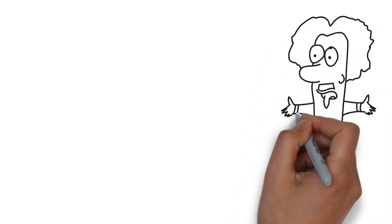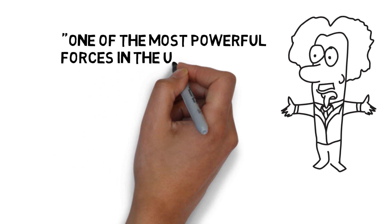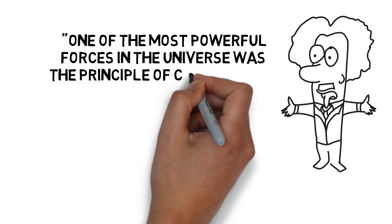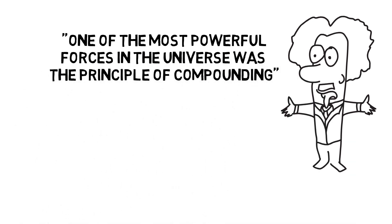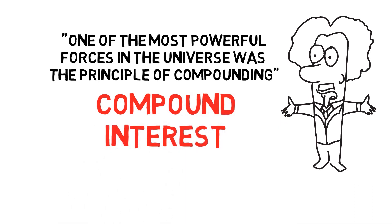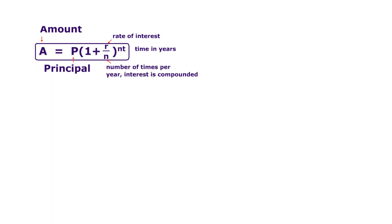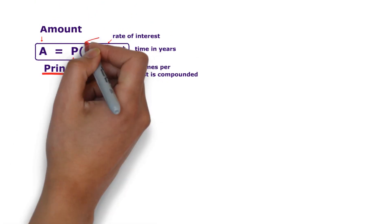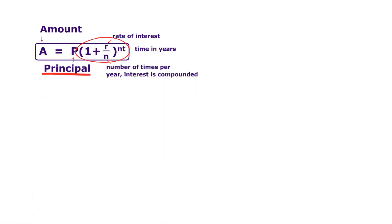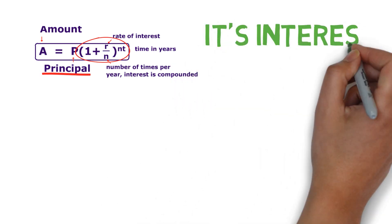Albert Einstein once noted that one of the most powerful forces in the universe was the principle of compounding. In investing, this manifests itself through something called compound interest. Compound interest is calculated on the principal amount and, this is the key, also on the accumulated interest of previous periods. It's interest on interest.